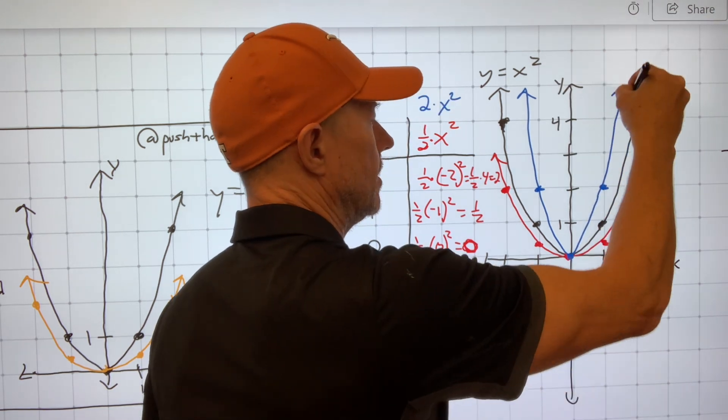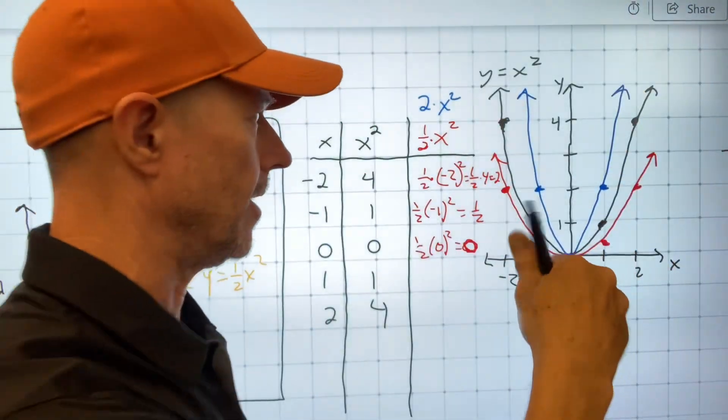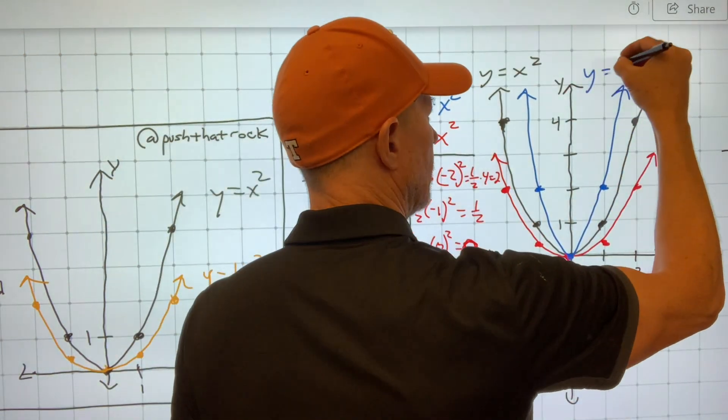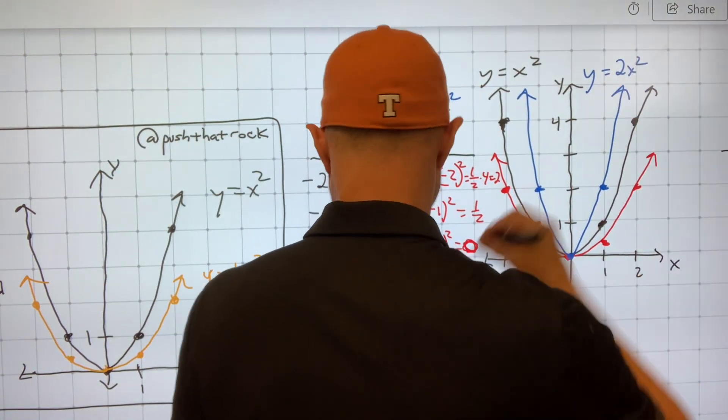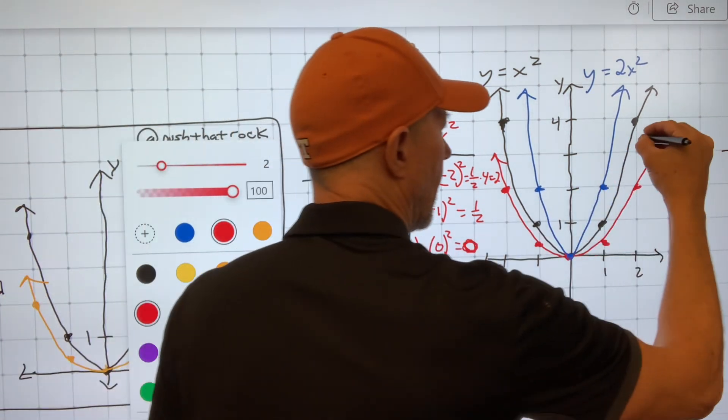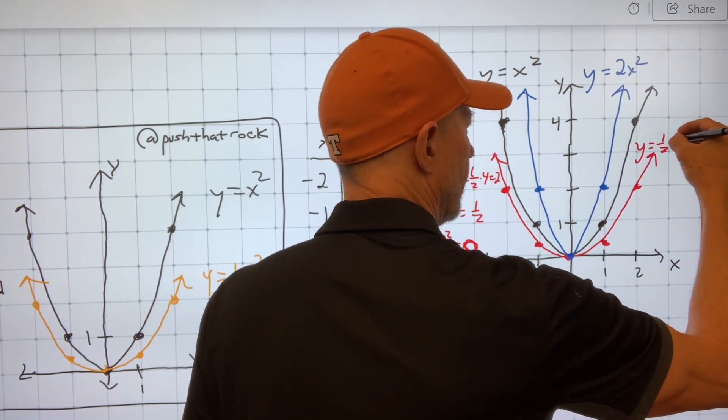And we call this sometimes a stretch of the graph. So this is y equals 2x squared, whereas the red graph was y equals 1 half x squared.